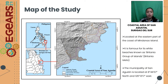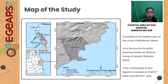This study will focus on the coastal area of San Agustin, Surigao del Sur, where this coastal area is located at the eastern part of the coast of the Mindanao island. This coastal area is famous for its white beaches and multiple islands called the Britannia group of islands.